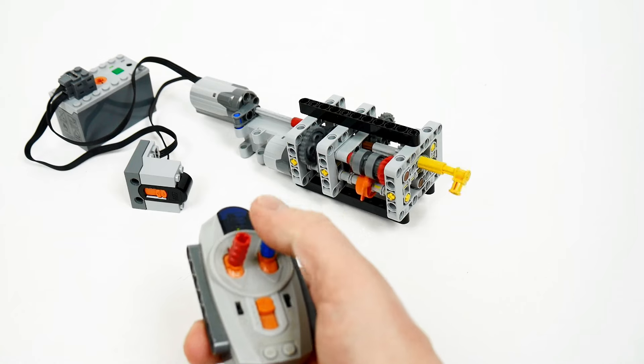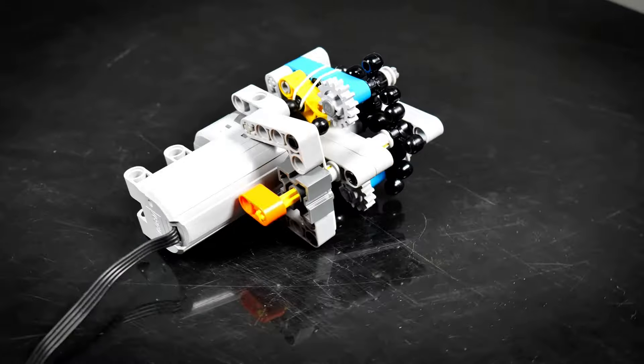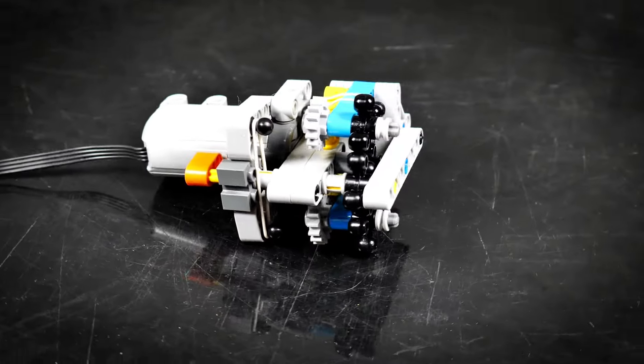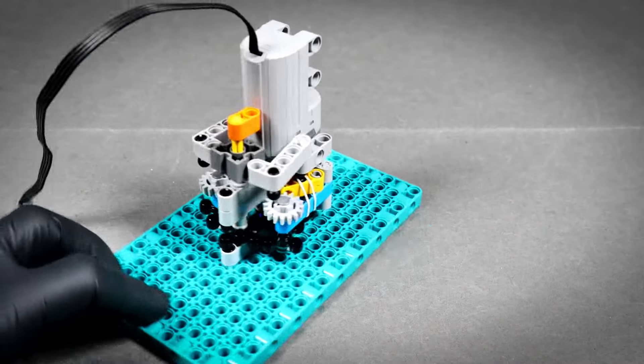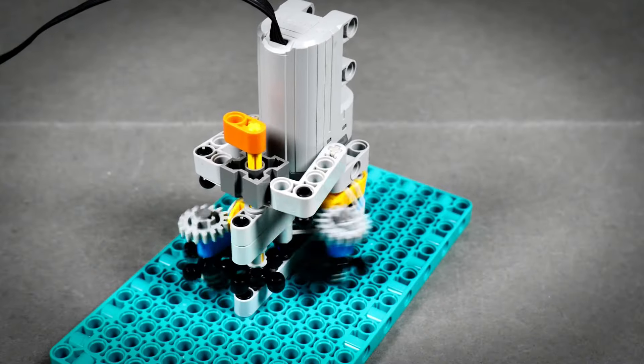And here's a solution: a stepper mechanism that can be rotated using the power function's servo motor, not once but an infinite number of times left and right. That means you can use it to control a Lego transmission without worrying about calibration or stopping the motor.